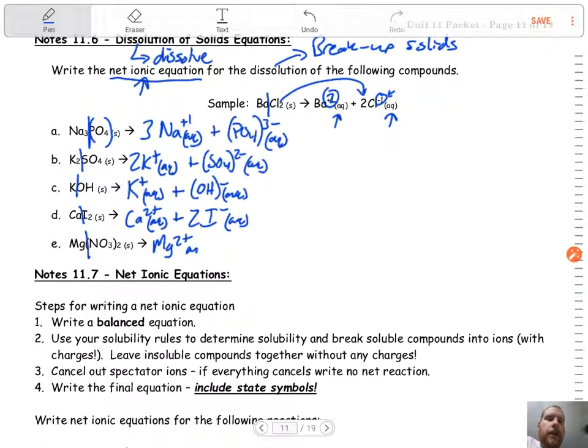Last one, Mg two plus aqueous plus two nitrate ions. Now we have two because there's a two on the outside of the parentheses. If you have questions, ask in class. But this is kind of the first step to what we're going to be doing in the next video.